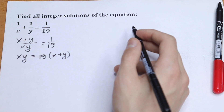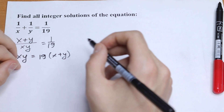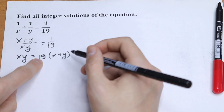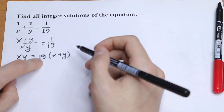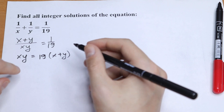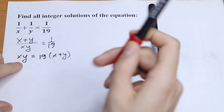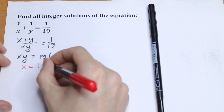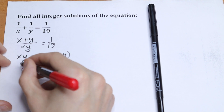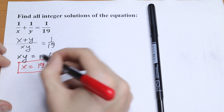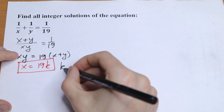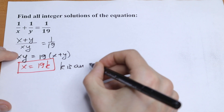So the given equation implies that to have an integer solution, at least one of x or y must be divisible by 19. And since the equation is symmetric, we can assume that x equals 19k, where k is an integer. So this will be our substitution.